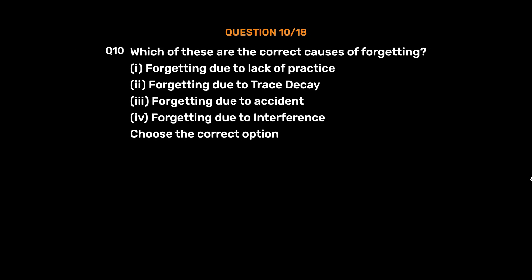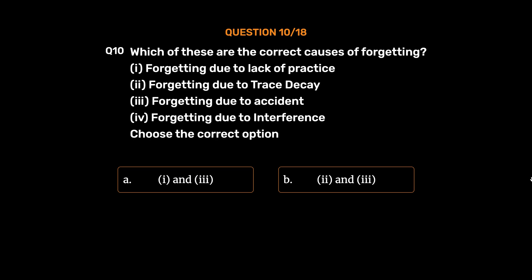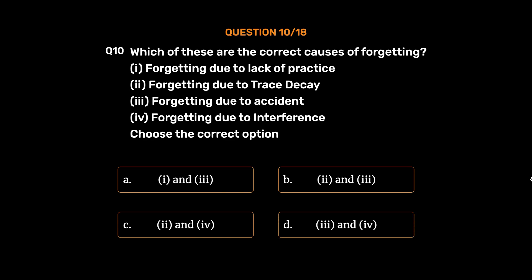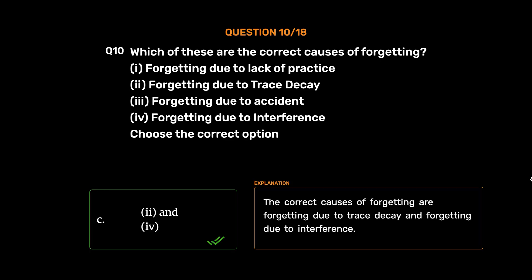Question number 10. Which of these are the correct causes of forgetting? I: Forgetting due to lack of practice. II: Forgetting due to trace decay. III: Forgetting due to accident. IV: Forgetting due to interference. Option A: I and 3. Option B: II and 3. Option C: II and 4. Option D: III and 4. The correct answer is Option C, II and 4. The correct causes of forgetting are trace decay and interference.